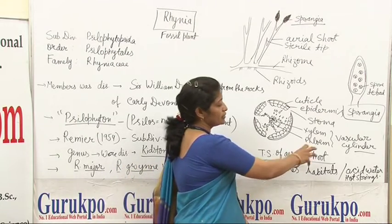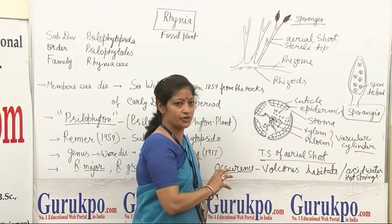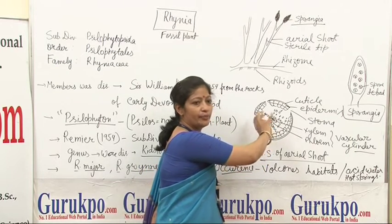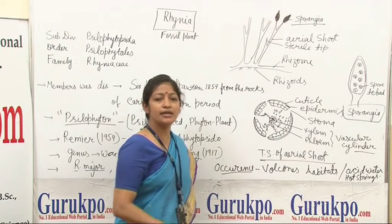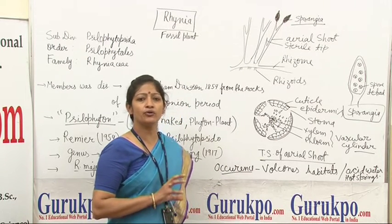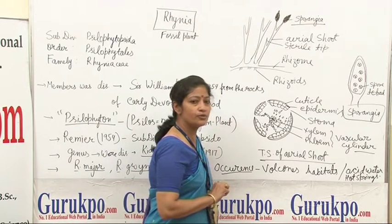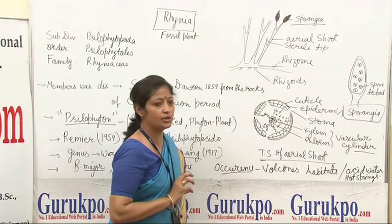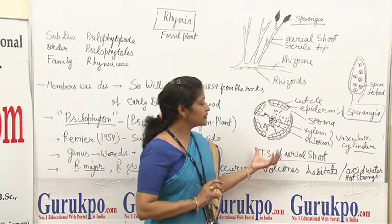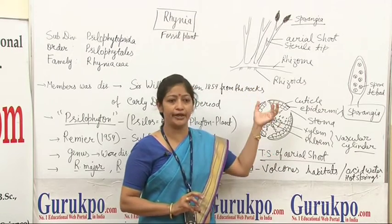If we see the vascular cylinder, it consists of a very simple structure — xylem surrounded by phloem cells. Xylem cells consist of only tracheids and they show only spiral thickening, and phloem cells are also reported as thin-walled cells. This is a reconstructed structure of the shoot of Rhynia.